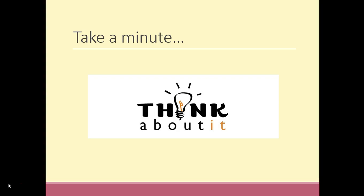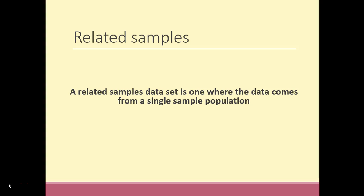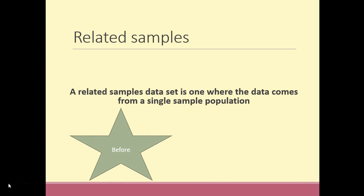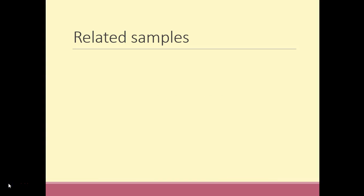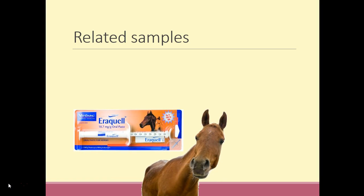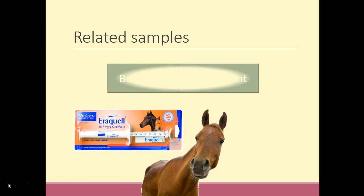Now let's take a look at related samples data. Related samples data is where data comes from a single sample population. A good example is a before-and-after treatment on the same sample population — for example, you might investigate worm load in a group of animals before and after a worming treatment.